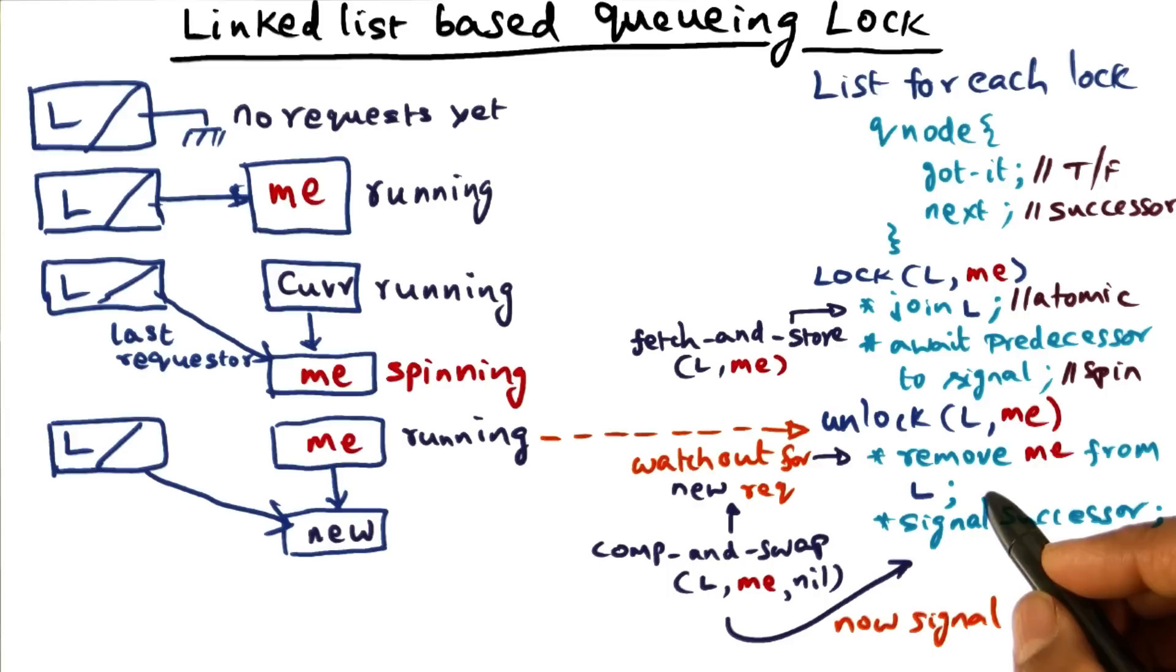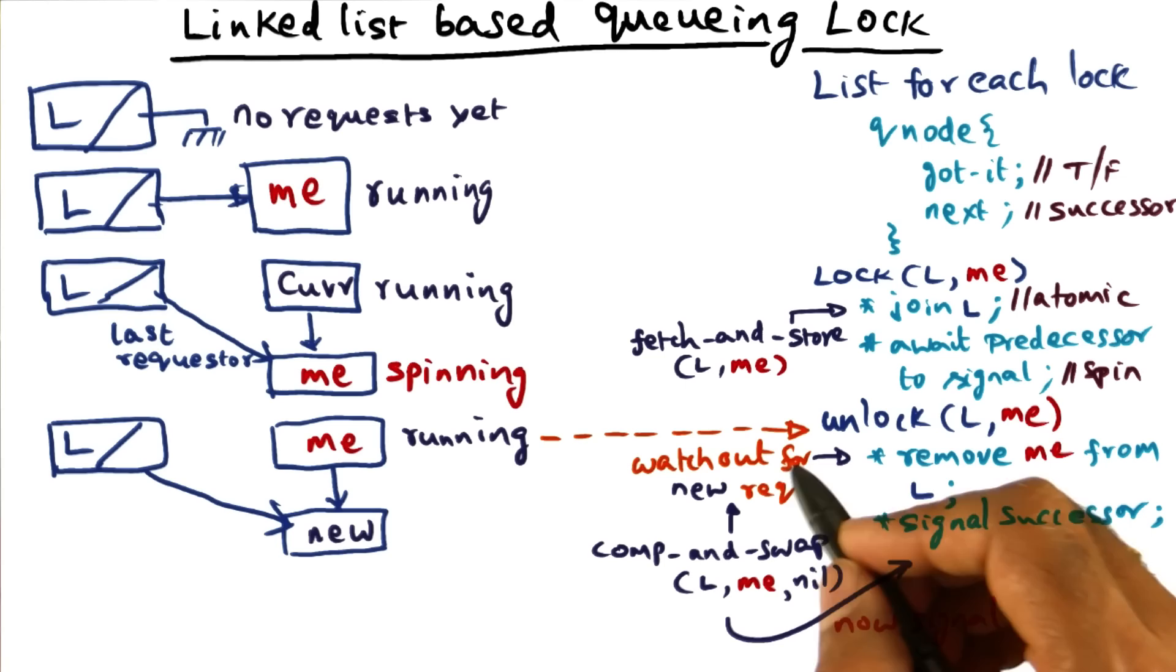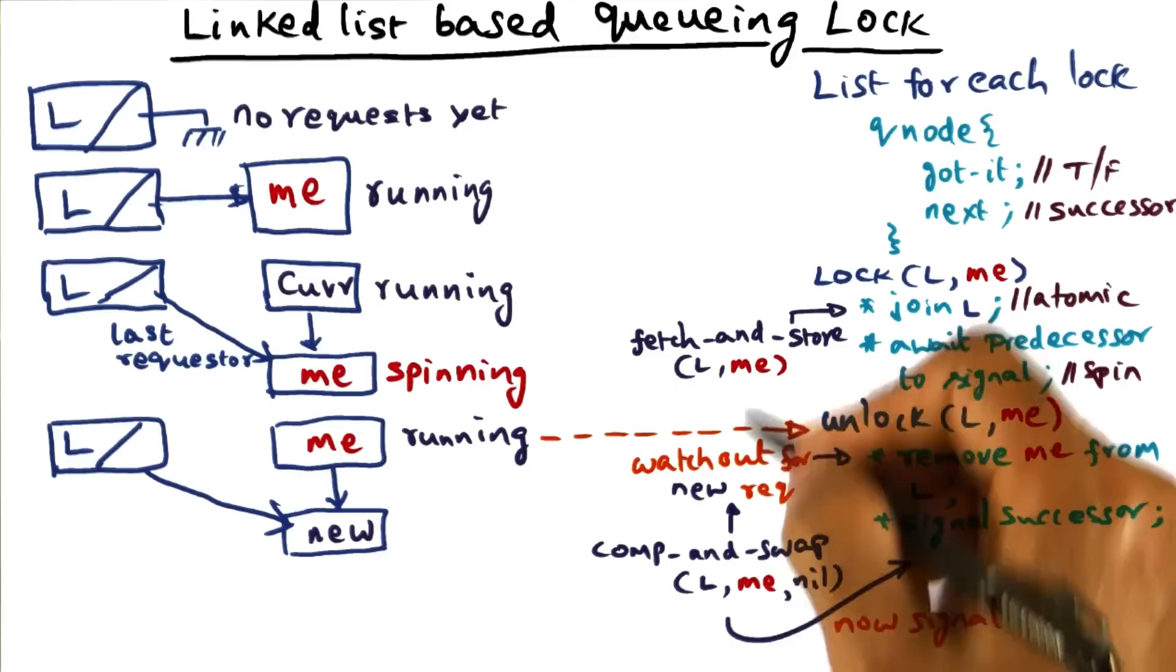One of the things that I mentioned is that both the linked list based queuing lock as well as the earlier array based queuing lock required fancier read-modify-write instructions. So for instance, in this case we need a fetch and store, and in this case, also compare and swap, two fancier read-modify-write instructions.